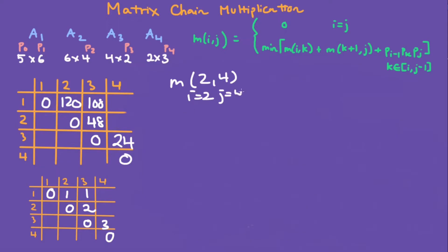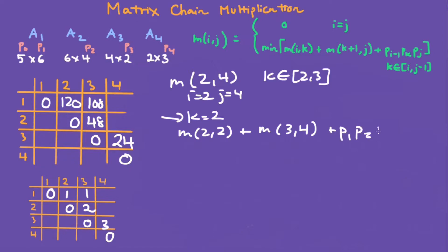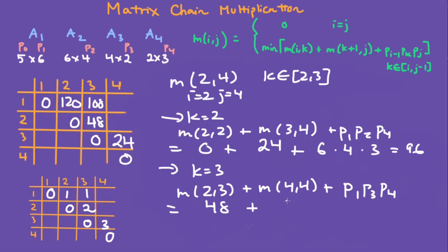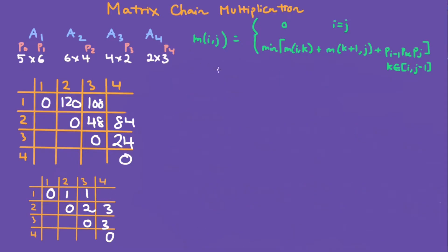Now for m[2,4]: i is 2, j is 4, and k goes from 2 to 3. When k is 2, we have m[2,2] plus m[3,4] plus p1 * p2 * p4. That's 0 plus 24 plus 6 * 4 * 3, giving 96. When k is 3, we have m[2,3] plus m[4,4] plus p1 * p3 * p4. That's 48 plus 0 plus 6 * 2 * 3, giving 84. We choose the smallest, 84, and the chosen k is 3.